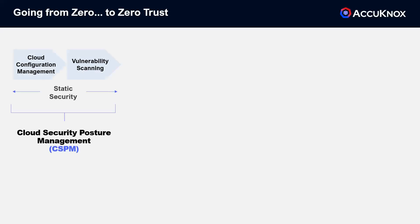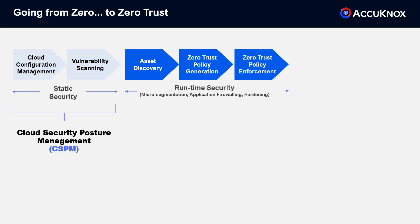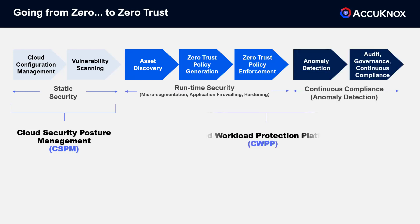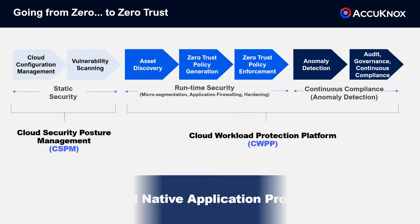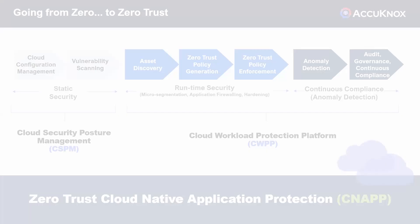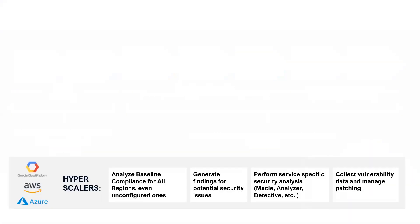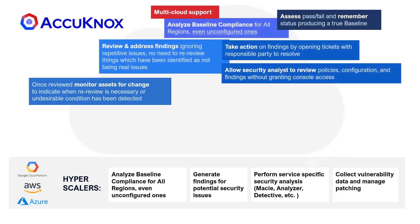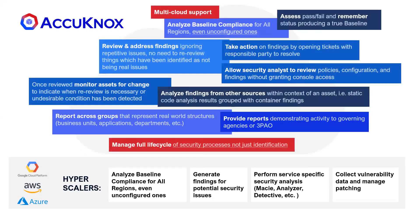The first step is to protect against known vulnerabilities — basic cloud security posture management, or CSPM. Next is to implement advanced security techniques like micro-segmentation and application firewalling. While the hyperscalers give you basic security capabilities, there's a lot they don't do, and that is precisely what we do.